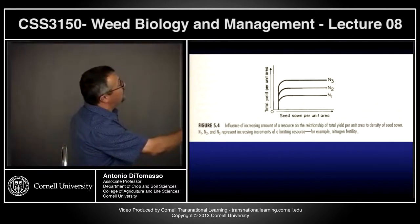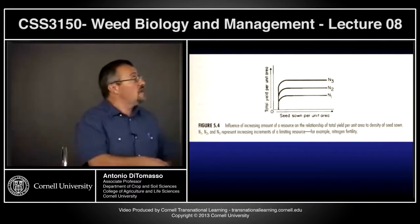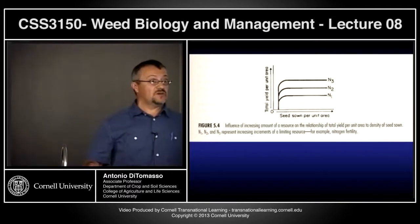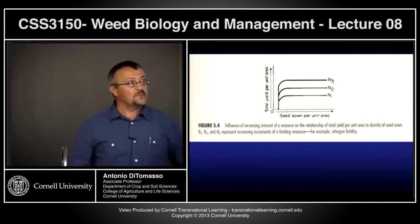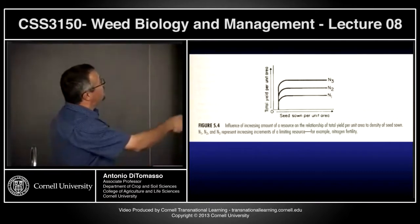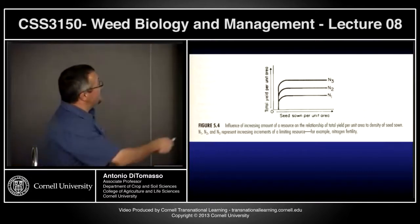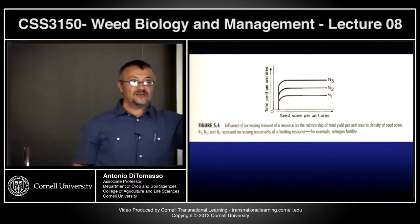The general relationship doesn't change. These are nutrient levels one, two, and three in increasing order. As you can see, the total yield per unit certainly increases — you do have more resources, these are inputs. But the general shape of the curve doesn't change. You're still going to have your 30,000 plants; however, in terms of yield it's going to be much greater. But it's not going to allow you to go to 35,000 or 50,000 plants and increase the yield.